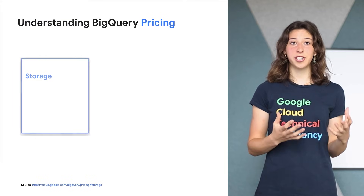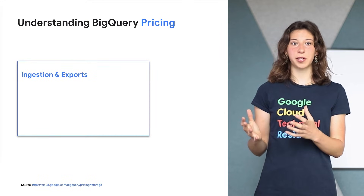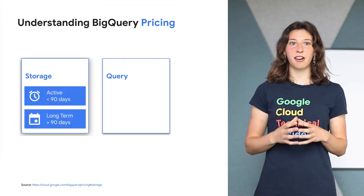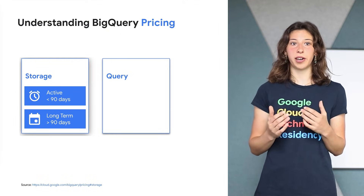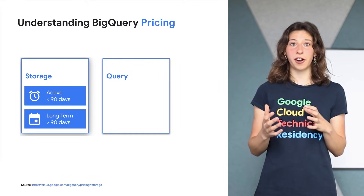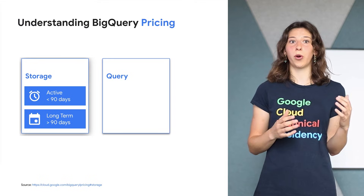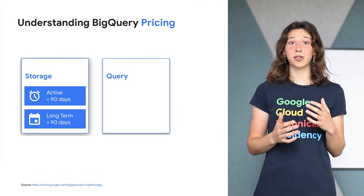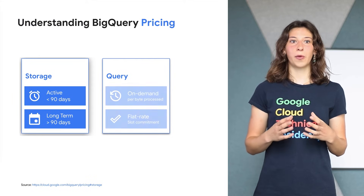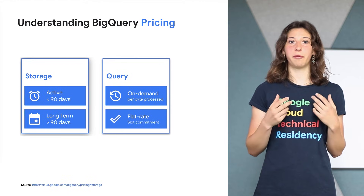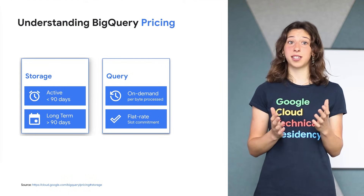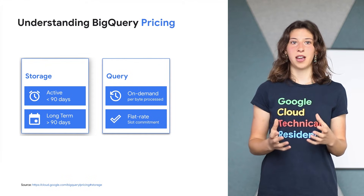So what does it cost you to use BigQuery? You pay for storage, queries, and some ingestion and export use cases. Storage costs are based on the amount of data stored and have two rates based on when the data was last modified. Tables or partitions in long-term storage — meaning they weren't modified in the last 90 days — see their storage price drop by 50%. Query costs are either on-demand, meaning you'll be charged for the number of bytes processed by the query (the first terabyte processed is free), or flat rate.